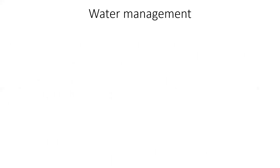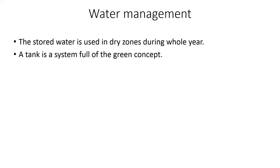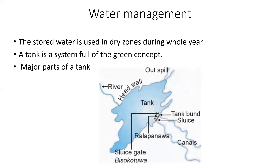Then water management. The stored water is used in dry seasons during the fallow year. A tank is a traditional water management system. The major parts of the tank include the river, head wall, out spill, tank, tank band, sluice, talapanaw, channels, sluice gate, and bisopatu.